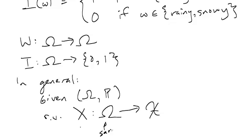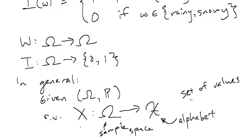So here, this is the sample space, and here, this is what we're calling the alphabet. And we'll also call this the set of values that random variable X takes on.